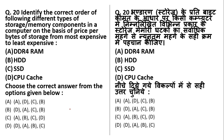Identify the correct order of storage memory components by price per byte from most expensive to least expensive. CPU cache is the most expensive, followed by DDR4 RAM, then SSD (solid state drive), and then HDD (hard disk drive). So the answer is DACB — cache memory first, then RAM, then SSD, then HDD.